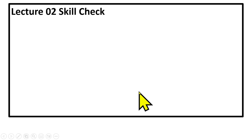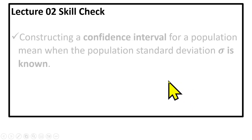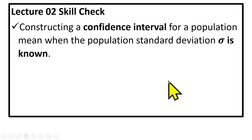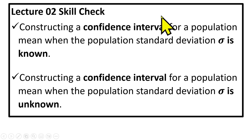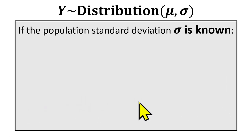Hello and welcome to your lecture 2 skill check. Today we're going to look at two things. First, we're going to look at constructing a confidence interval for a population mean when the population standard deviation is known, and then the other scenario is constructing an interval when that standard deviation is unknown. In the first case, we're going to use a z-table. In the second case, we're going to use a t-table. So let's dig in.